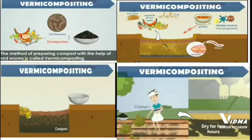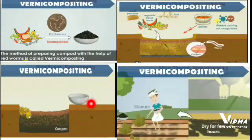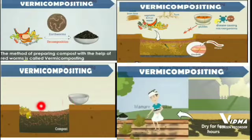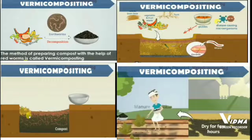The pit is then covered with gunny bags so that other animals, birds, and insects cannot eat the earthworms. After some days, the earthworms convert all the biodegradable waste into compost. The earthworms are then separated by placing a little food item to attract them, and the compost is collected. This compost can be stored for some time and is then used in the soil to make it fertile.